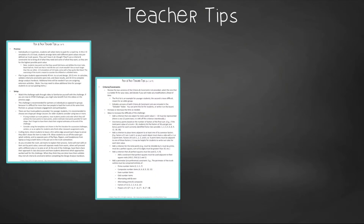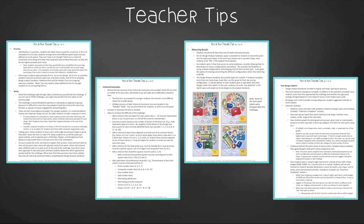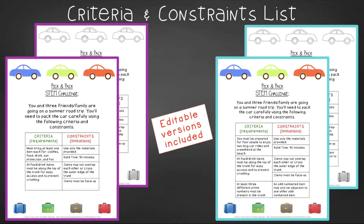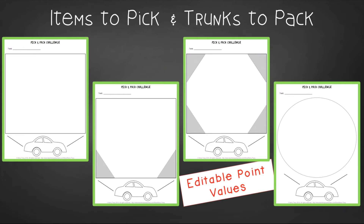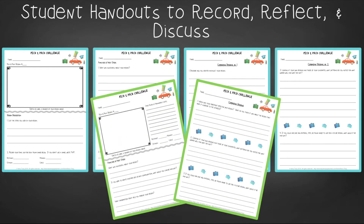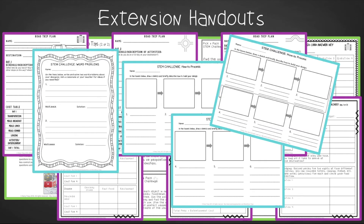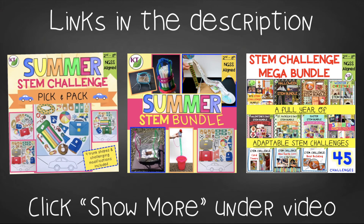In teacher tips, you'll find premise and setup, how to increase or decrease difficulty through the criteria and constraints list, measuring results, and cross-curricular extension suggestions. You'll find two levels of editable criteria and constraints lists so you can tailor the challenge to your students. You'll also get items for your students to pick and trunks for them to pack. For student design analysis handouts, there are two versions: a four-page expanded version for younger students and a two-page condensed paper-saver version. You'll also find group discussion questions, task card templates and samples, road trip planning sheets, and math extension and process flow templates. This resource is available individually and is part of the discounted summer and mega STEM challenge bundles, with links in the description below the video.